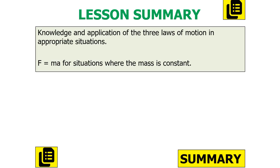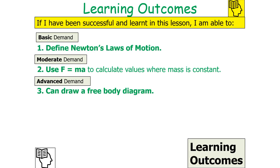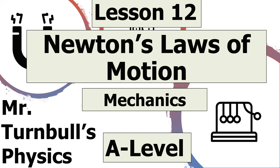To summarize today's lesson, we should have knowledge and application of the three laws of motion in appropriate situations, and F equals ma for situations where mass is constant. We should be able to define Newton's laws of motion, use F equals ma to calculate values where mass is constant, and draw free body diagrams. I hope you've enjoyed this lesson on Newton's laws of motion, part of the mechanics topic in AQA A-level physics. Thank you very much for watching and have a lovely day.